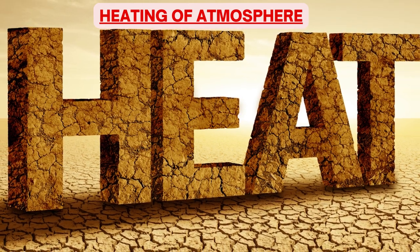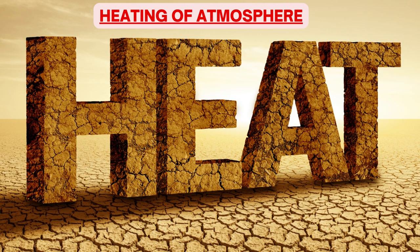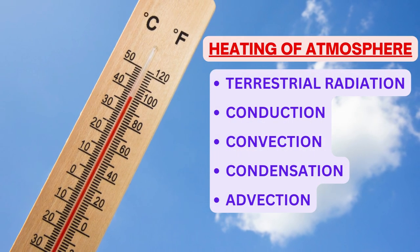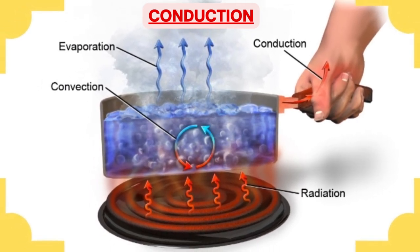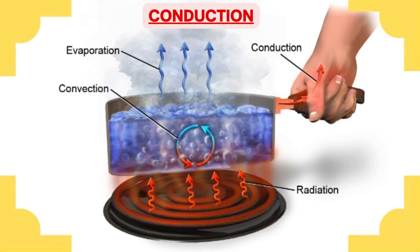It is natural to presume that the atmosphere is heated from solar radiation, but that is not true. The atmosphere is transparent to solar radiation, and the atmosphere gets heated mainly from below — that is from the earth's surface. Atmospheric heating takes place through one of five ways. The first is terrestrial radiation, which we have already discussed. The second is conduction — when you put a utensil on a gas stove, the handle also gets heated as heat is transferred from one atom to another. Similarly, when air near the earth gets heated, heat is transferred to higher heights through conduction.